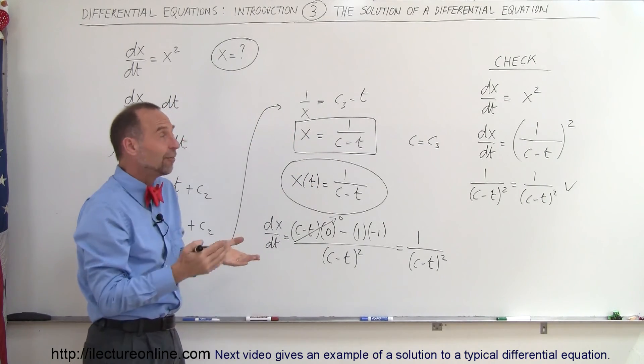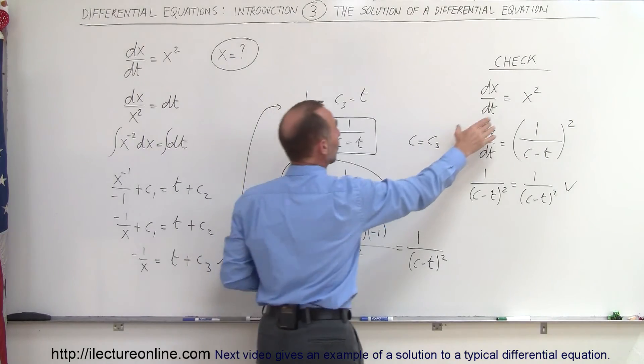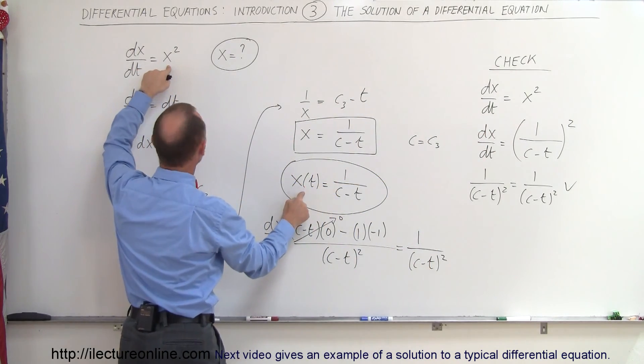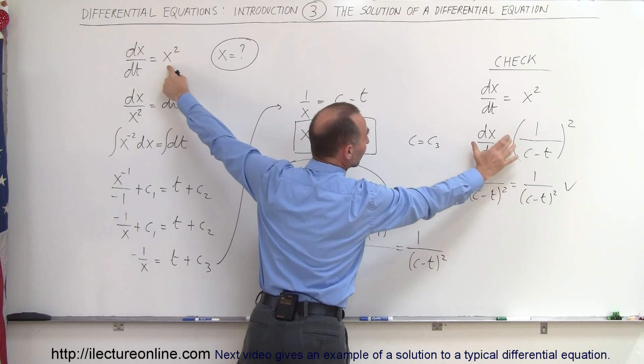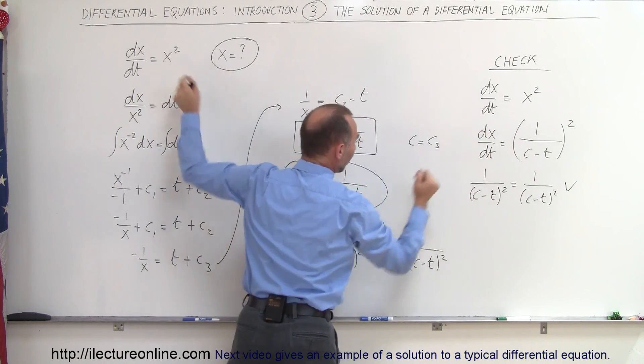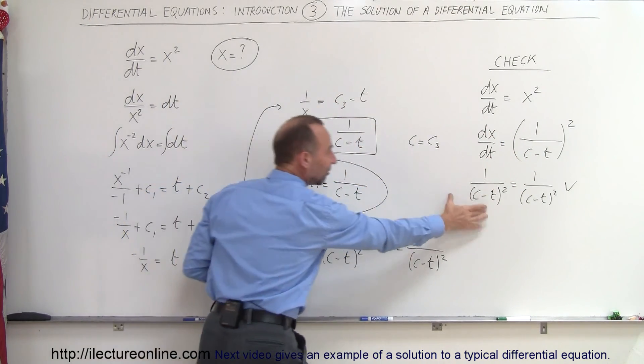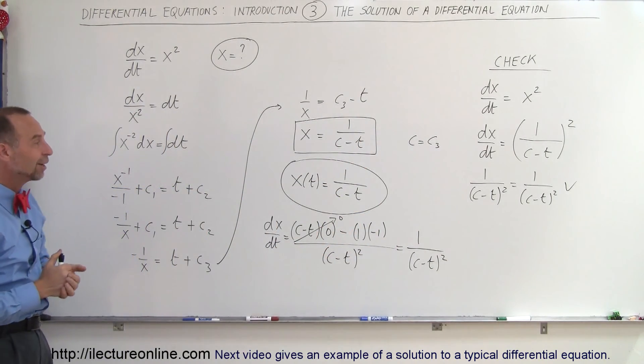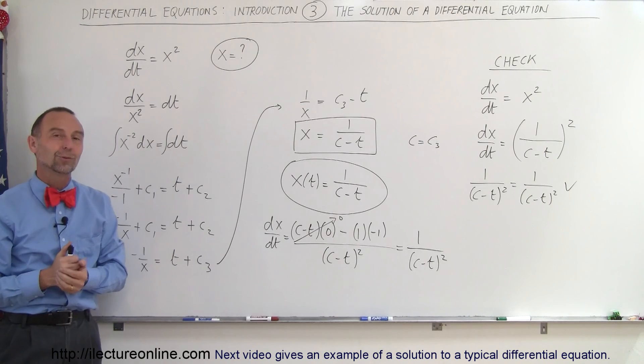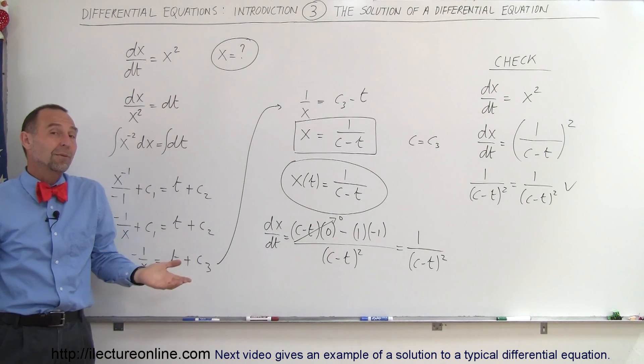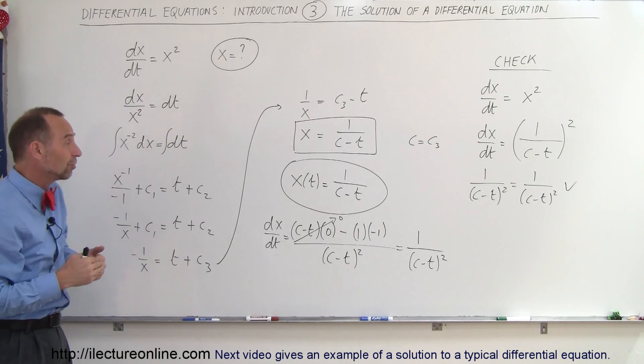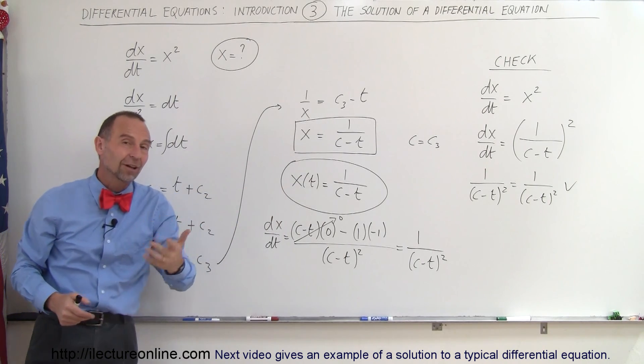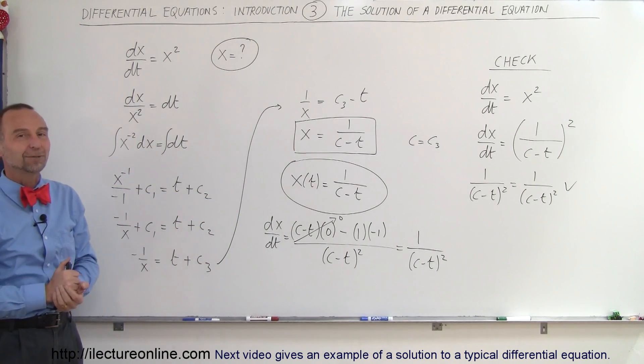And then to verify it, we then do a check, we write our original differential equation, we take our solution x, we square it, we put on the right side equation. And then we take the derivative of x with respect to time, put on the left side equation, and you can see they're both the same. And therefore we found the correct solution to our differential equation. So that's what we mean by a solution of a differential equation. It's simply a function of that variable, a function in this case of t, and that's how it's done.